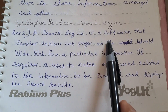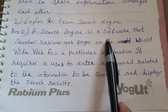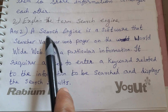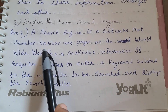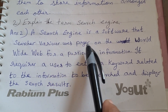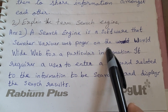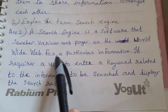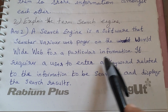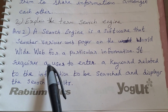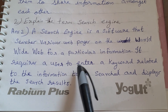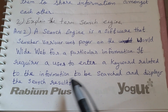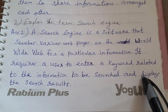Explain the term search engine. A search engine is a software that searches various web pages on the World Wide Web for particular information. It requires a user to enter a keyword related to the information to be searched and displays the search result.